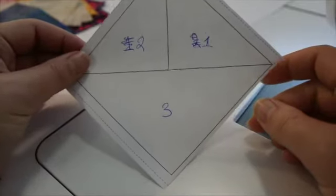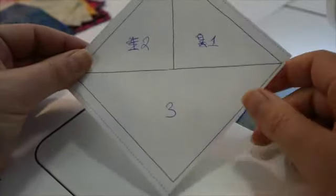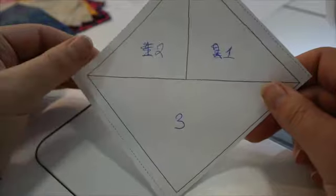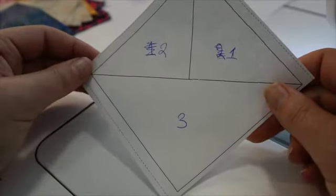As you can see, paper piecing has numbers on it. One, two, and three. And that's the order we're going to lay down our fabric.